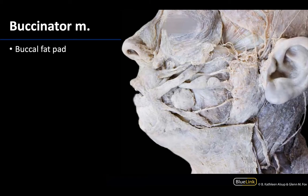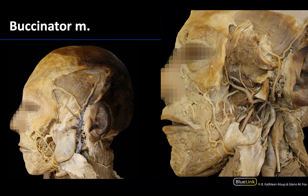The last muscle to cover is not actually a muscle of mastication but a muscle of facial expression that is in very close proximity to the muscles of mastication: the buccinator muscle. Recall that the buccinator is on a deeper plane than many muscles of facial expression and is covered superficially by a buccal fat pad, which is variably and irregularly shaped — nestled right anterior to the masseter muscle.